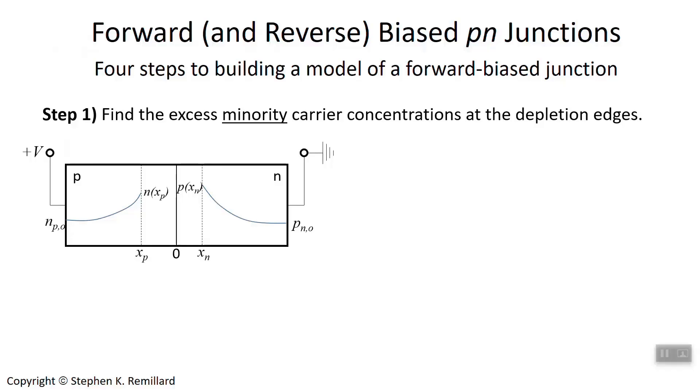On the P-side, the minority carriers are the electrons, and on the N-side, the minority carriers are the holes. Right now, we're going to find a way to express the minority carrier concentrations right at the depletion edges. You remember X sub N and X sub P locate the depletion edges.